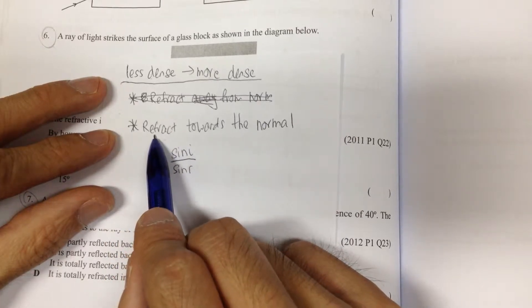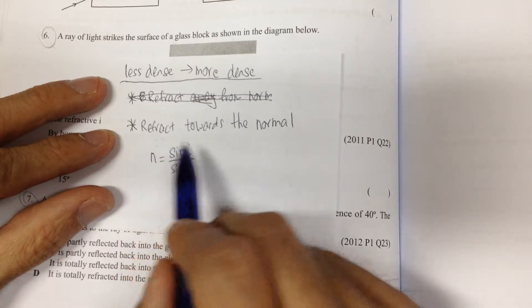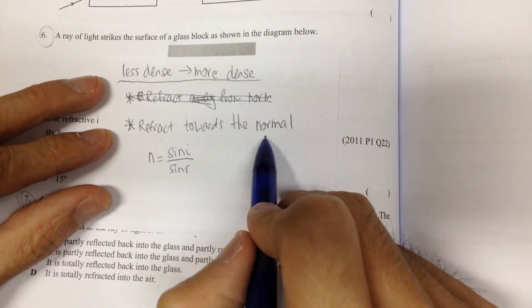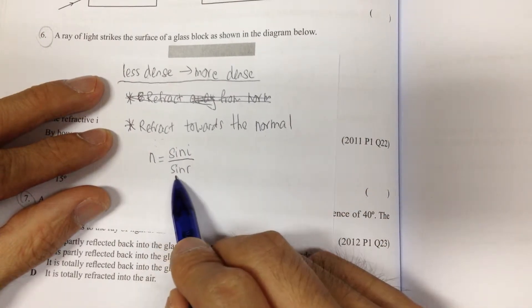Okay, there's only one criteria, and that is refract towards the normal. So, and then the formula to use is n equal to sine i over sine r.